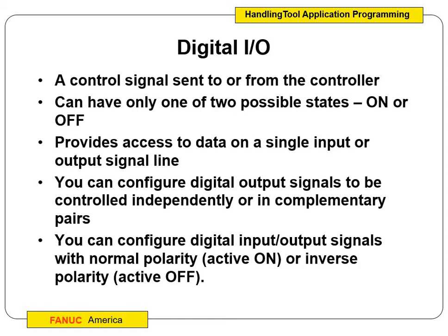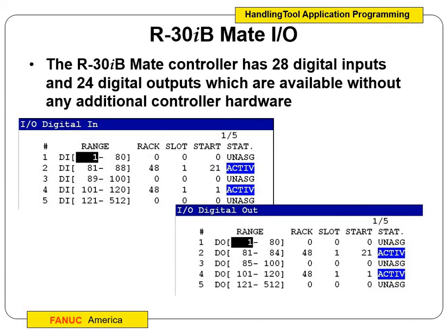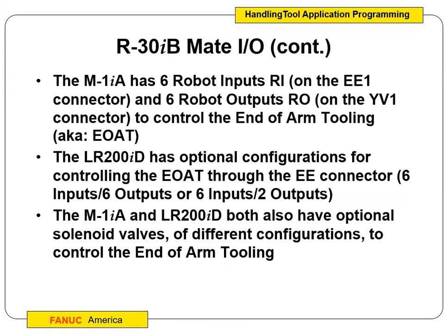We can send the control signal to or from the controller and look at the digital I/O. Even on our large robot we can manipulate the I/O and manually turn things on and off. That's how the grippers are tied on the large robot — to the I/O — versus using a macro on the other smaller robots on the teach pendant. It provides access to data on a single input or output line, and we can do them in pairs. We can configure the digital I/O signals with polarity, so we can have them as active on or active off. The R30IB main controller has 28 digital inputs and 24 outputs as standard. The M1IA robot has six inputs and six outputs — that's the LR200 — with optional configurations through the end-of-arm tooling. The M1IA and LR200ID have optional solenoid valves, so we can configure the end of our tooling as well.